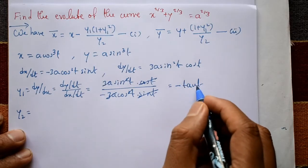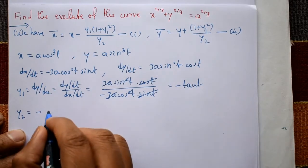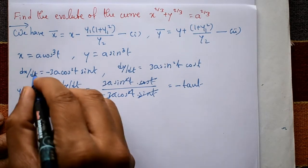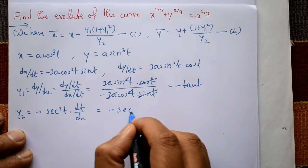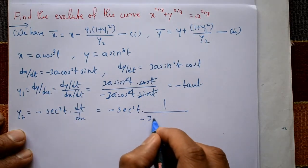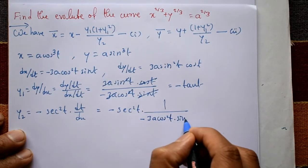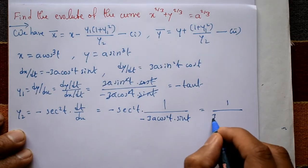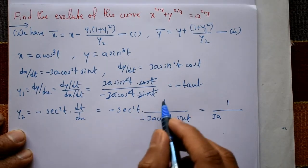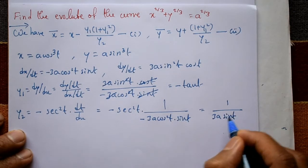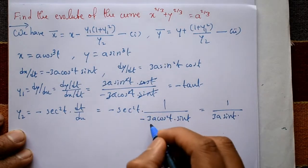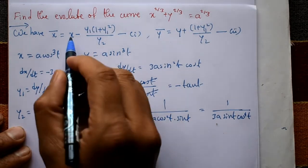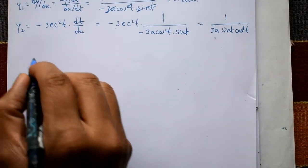For y2, differentiate y1 = -tan(t) with respect to x: this gives -sec²(t)·(dt/dx). Since dx/dt = -3a·cos²(t)·sin(t), we get dt/dx = -1/(3a·cos²(t)·sin(t)). Therefore y2 = (1/(3a))·sec²(t)/(cos²(t)·sin(t)), which simplifies to 1/(3a·sin(t)·cos⁴(t)).